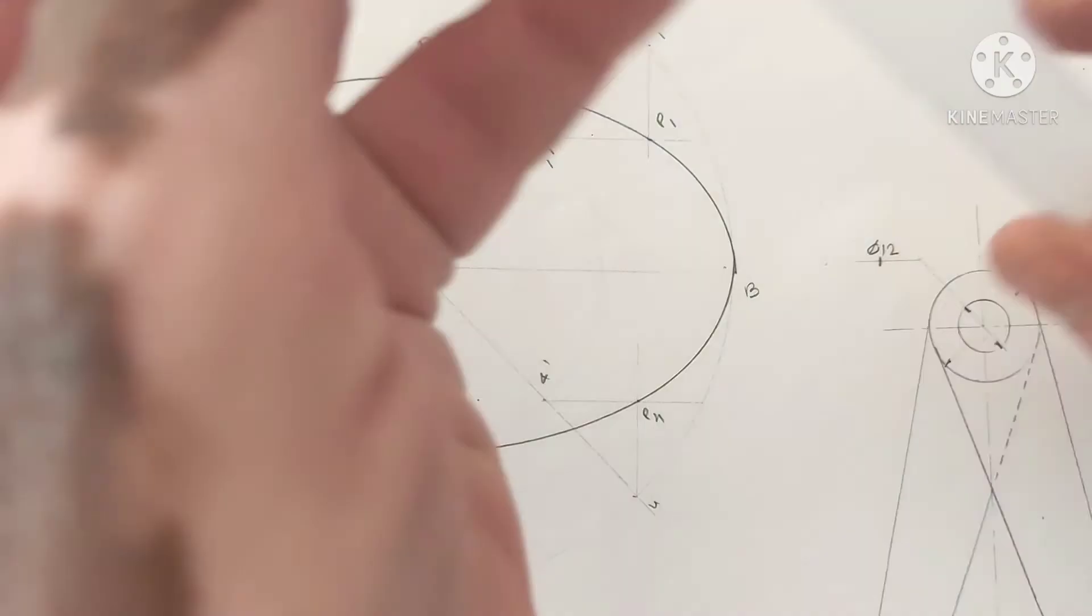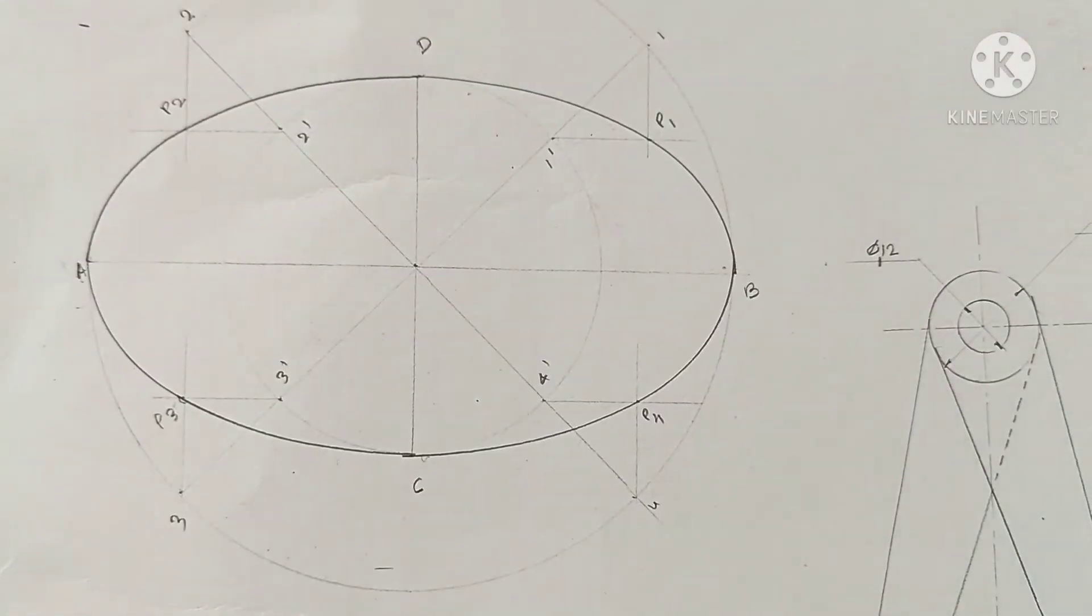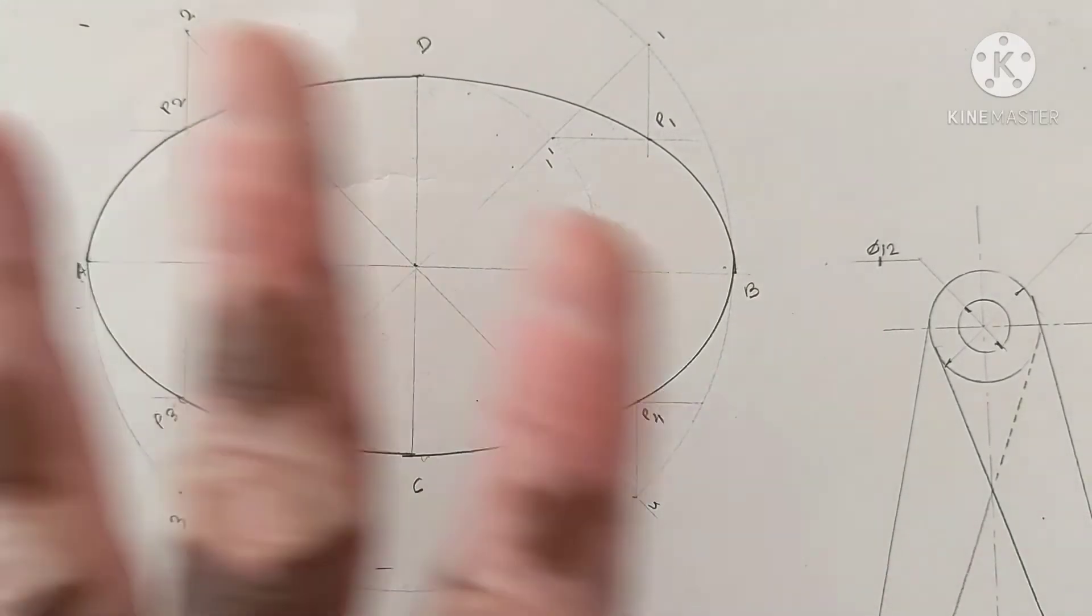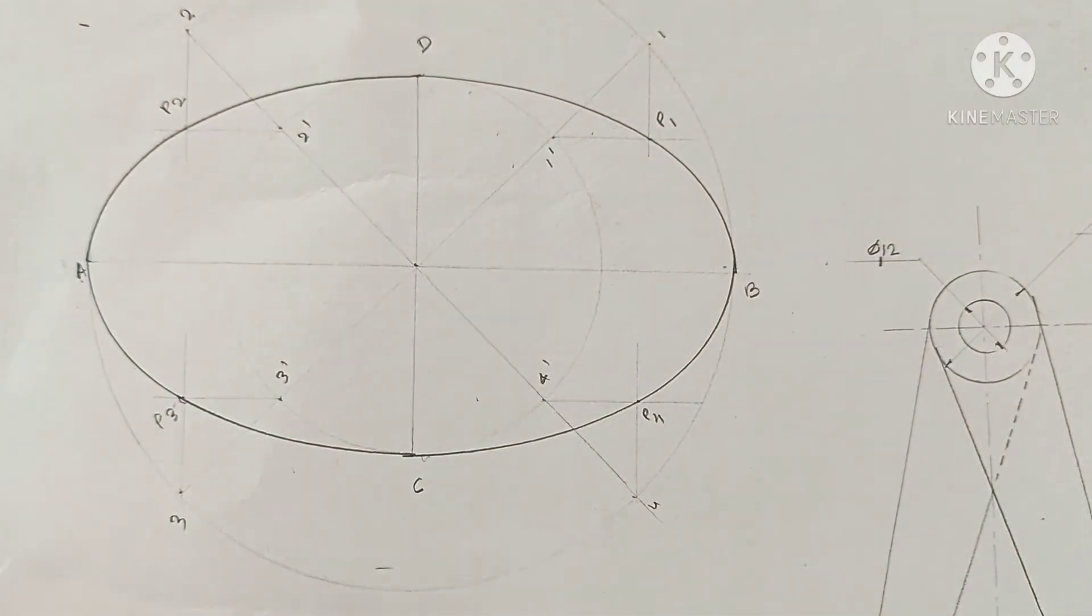This is an ellipse and method is known as concentric circle method. As far as line work is concerned, ellipse will be dark and all construction line should be faint.